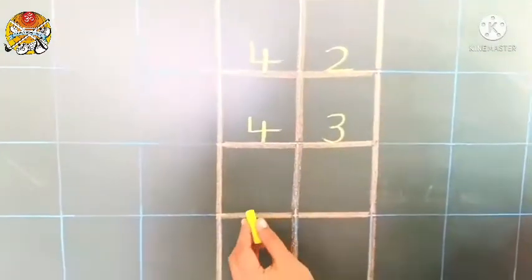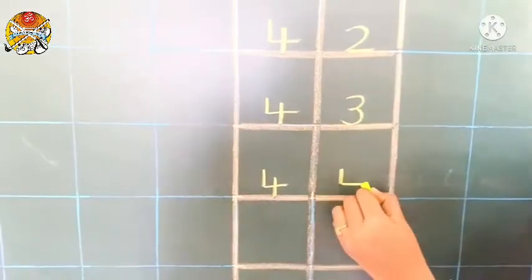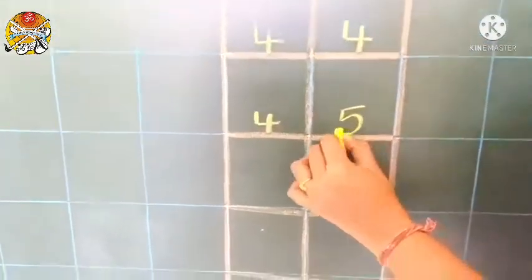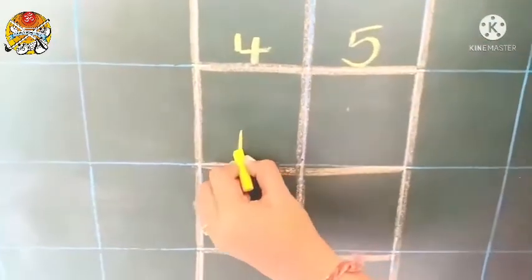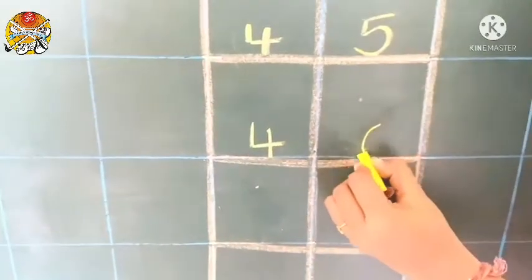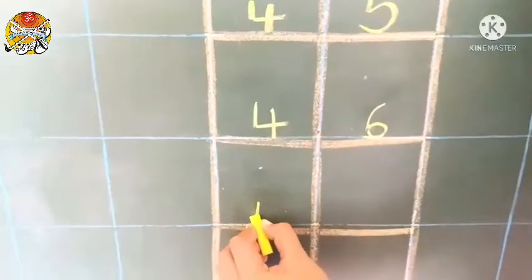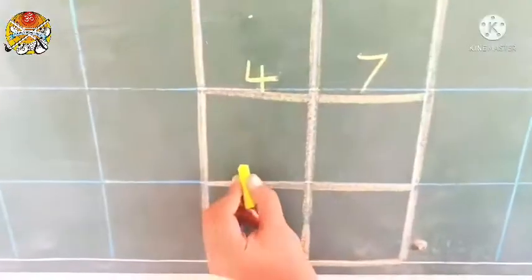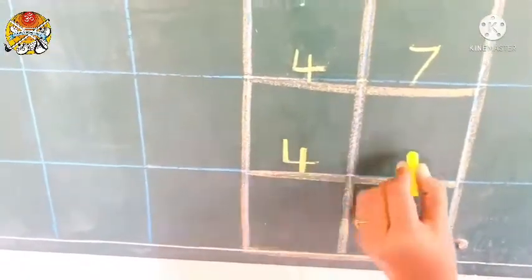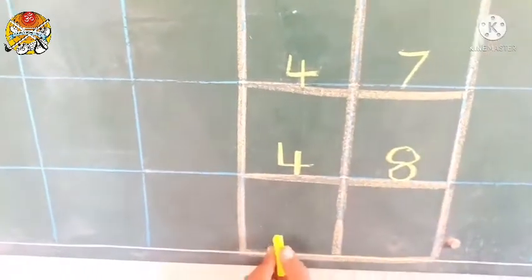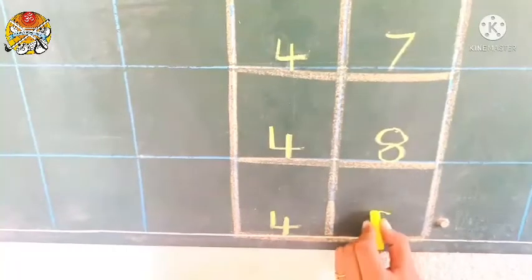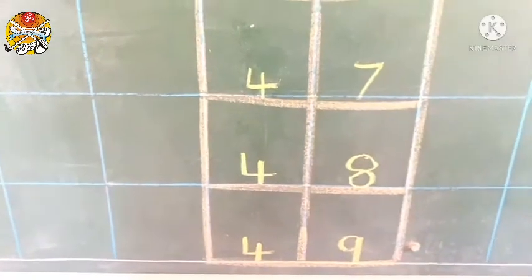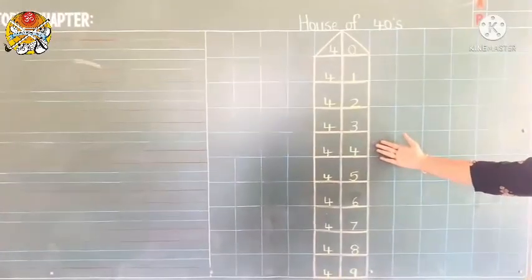What comes after 43? 44. 45. What comes after 45? 46, 47, 48. And what comes after 48? 49. Stop. Because there are no more boxes. So in this way you have to complete house of 40's.